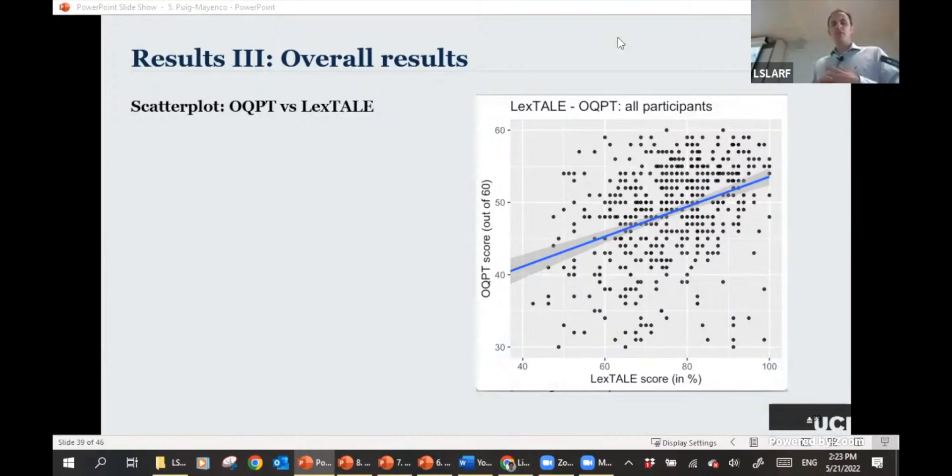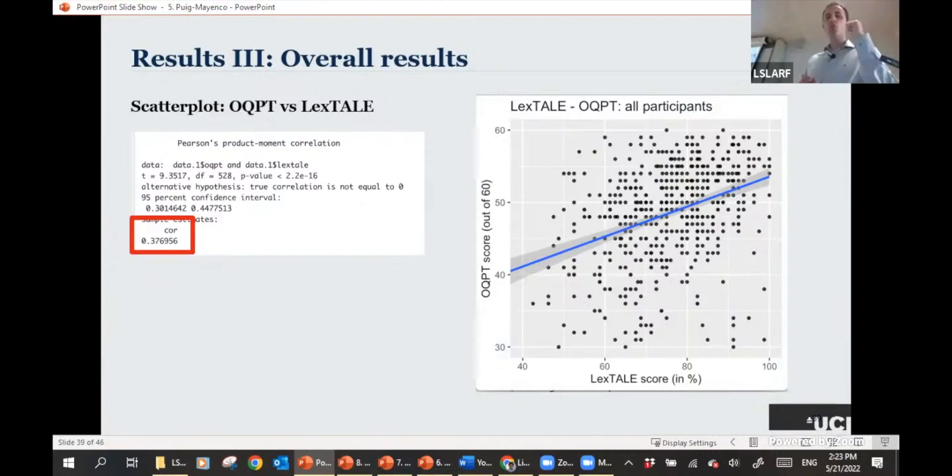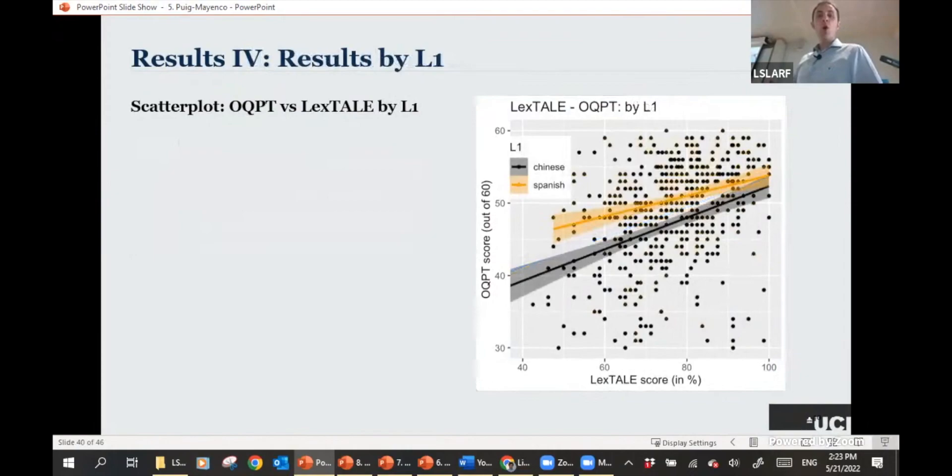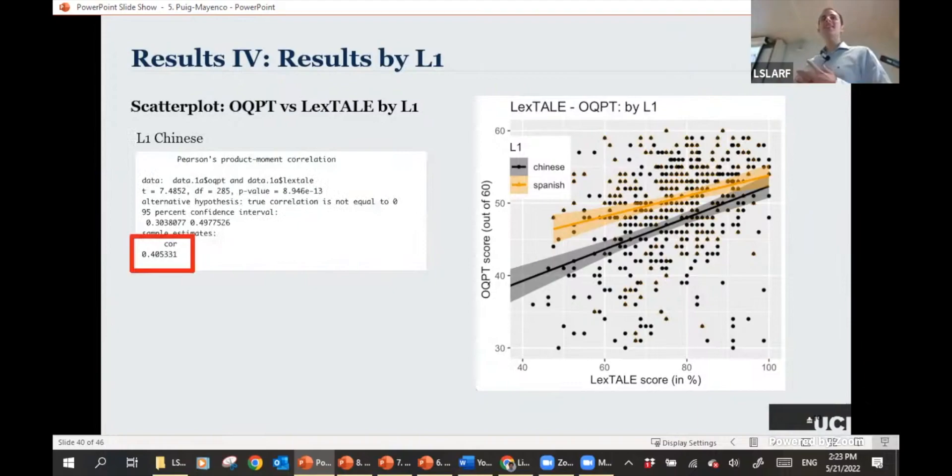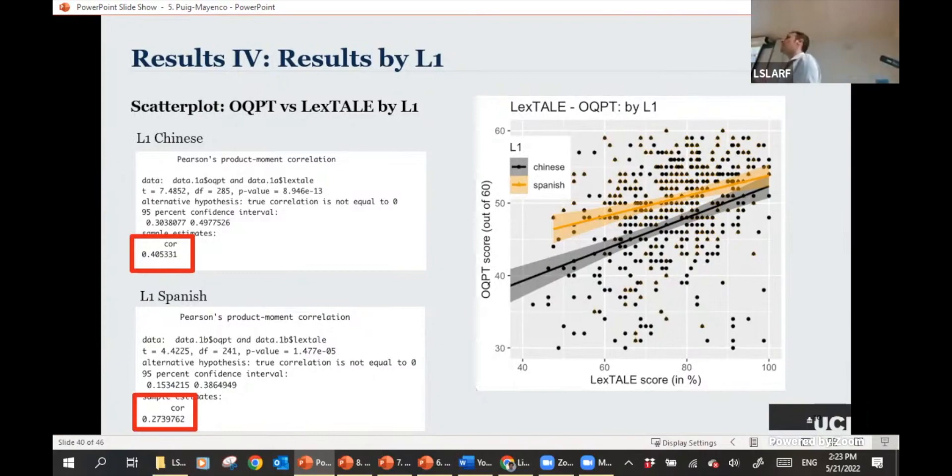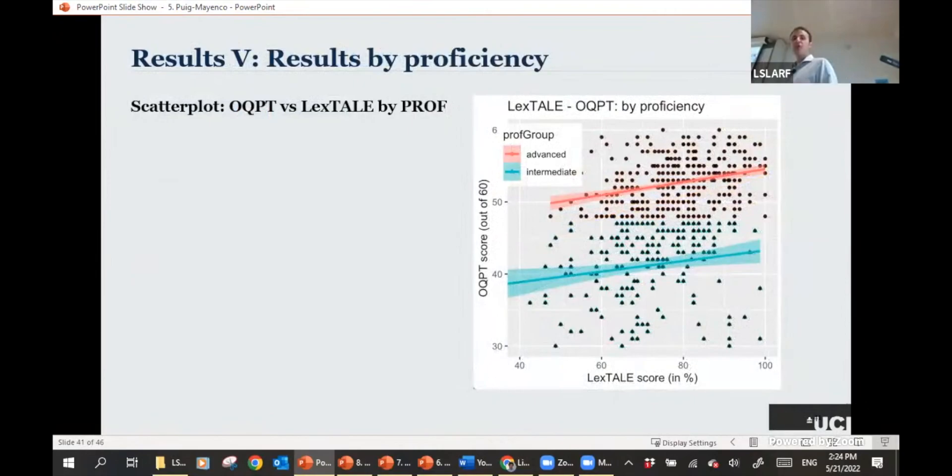So those are the results. In terms of the overall look, what we do see is that there is a moderate correlation between the LexTALE score and the Oxford Quick Placement Test of 0.37 when we don't take into account L1 or proficiency. When we look at the scores by L1, so with orange, we've got the Spanish group, and in black, we've got the Chinese group. What we do see is that there is a slightly higher correlation of 0.40, but still moderate correlation for the Chinese group. And in fact, contrary to our expectations, a lower correlation for the Spanish group. We've got 0.27, so it's a low correlation for the Spanish group.